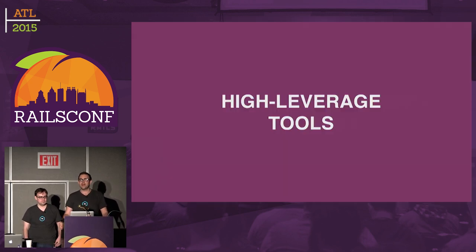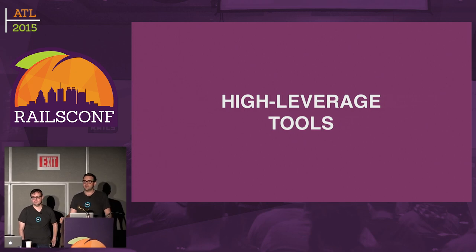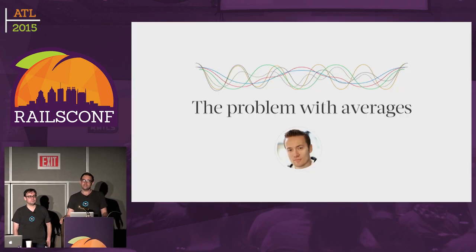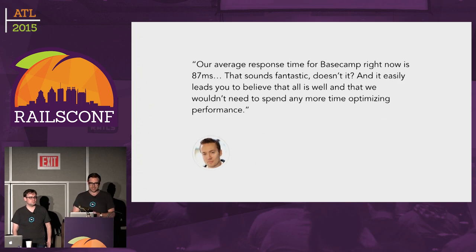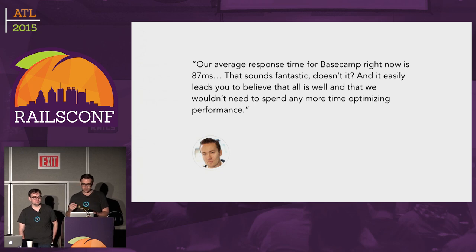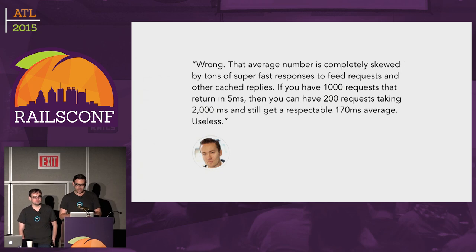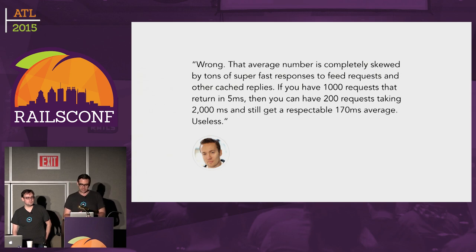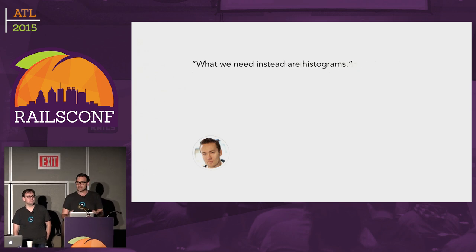Fundamentally, what that means is that we need higher leverage tools. When we built Skylight, the thing we really wanted to solve was that all the tools we were using to measure the performance of our applications were reporting averages. DHH wrote this really great blog post in like 2007 where he said our average response time for Basecamp is 87 milliseconds, which sounds fantastic. But average numbers are completely skewed by tons of super fast responses to feed requests and other cache replies. You can have a thousand requests that return in five milliseconds, then have 200 requests taking two seconds and still get a respectable 170 milliseconds average. Useless. I think it's worse than useless — I think it's accurately misleading. So instead what we need are histograms.